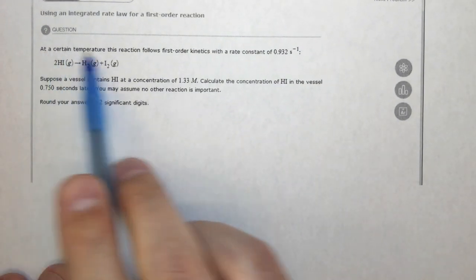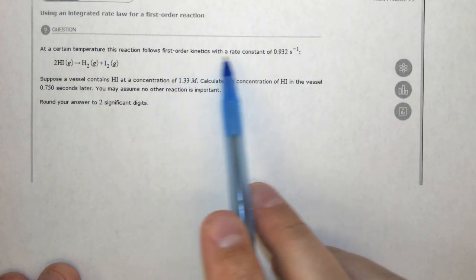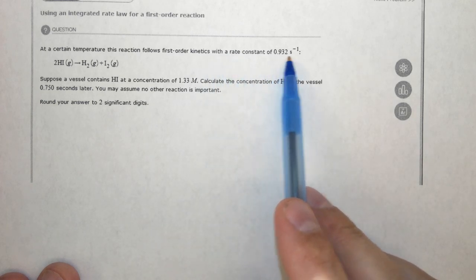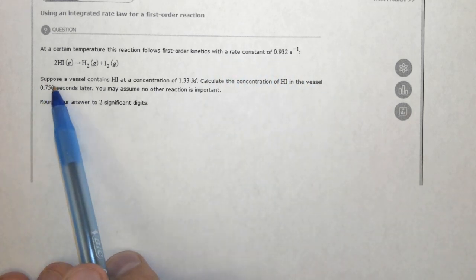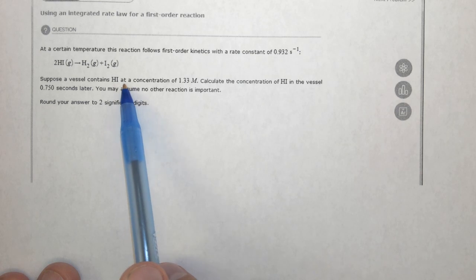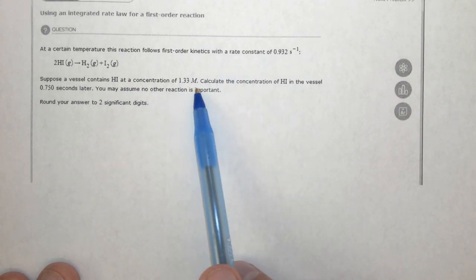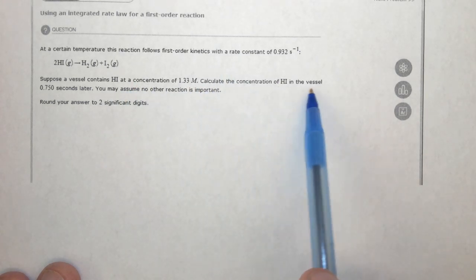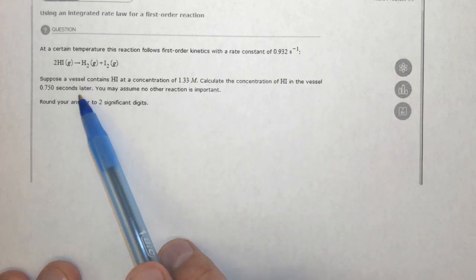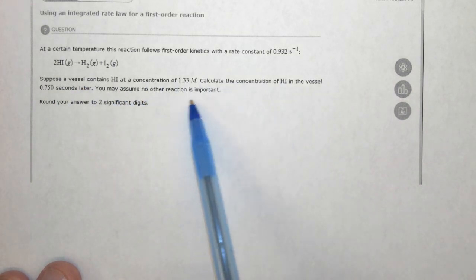This question says at a certain temperature, this reaction follows first-order kinetics with a rate constant of 0.932 s⁻¹. Suppose a vessel containing HI at a concentration of 1.33 M. Calculate the concentration of HI in the vessel 0.75 seconds later. You may assume no other reaction is important.